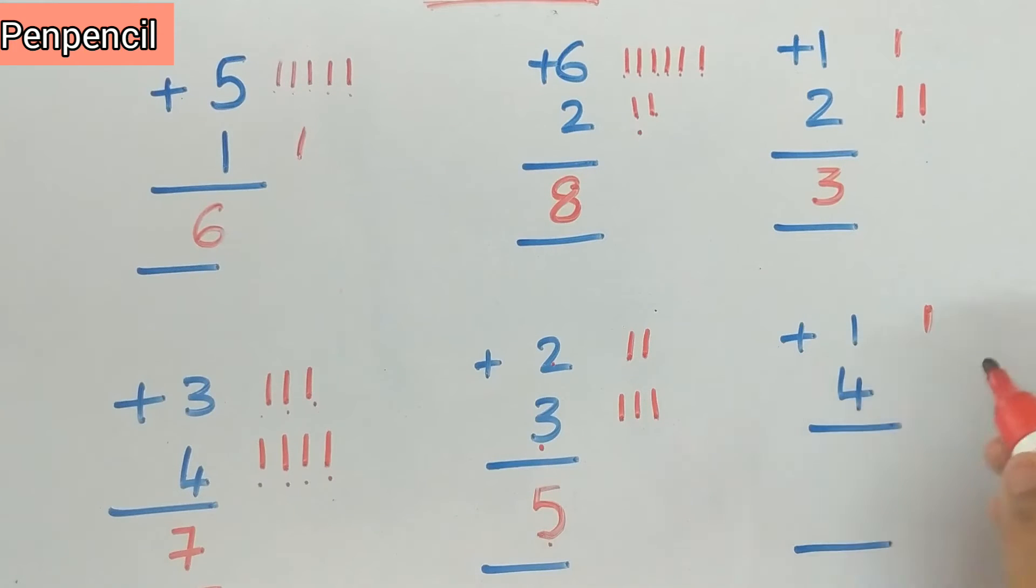1 plus 4. Draw 1 line, then 4 lines: 1, 2, 3, 4. Now count all: 1, 2, 3, 4, 5. The sum is 5. So we say 1 plus 4 is 5.